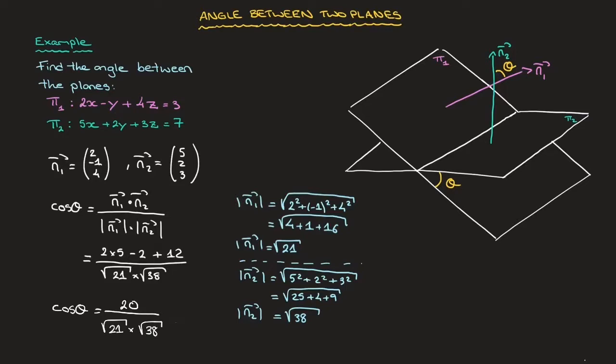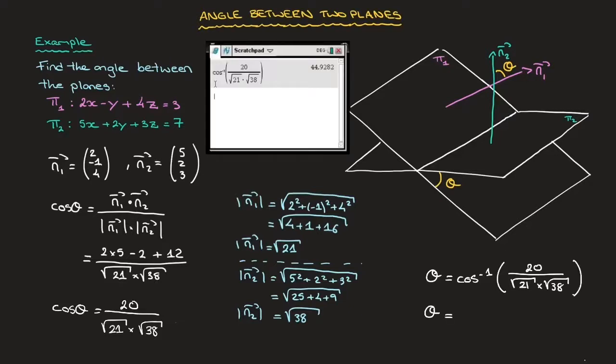Finally, using arc cosine or inverse cosine, we can state that θ equals arccos(20 / (√21 × √38)). And by all means check, but with our calculators, we find that equals 44.9 degrees, where I've rounded to one decimal place.